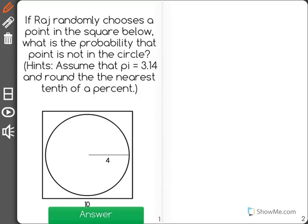If Raj randomly chooses a point in the square below, what is the probability that point is not in the circle? Assume that pi equals 3.14 and round to the nearest tenth of a percent.